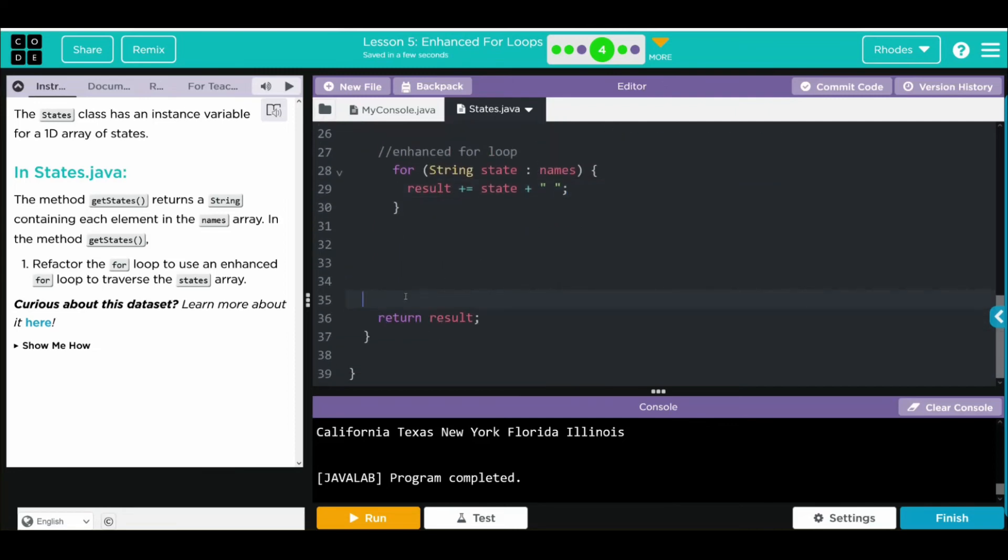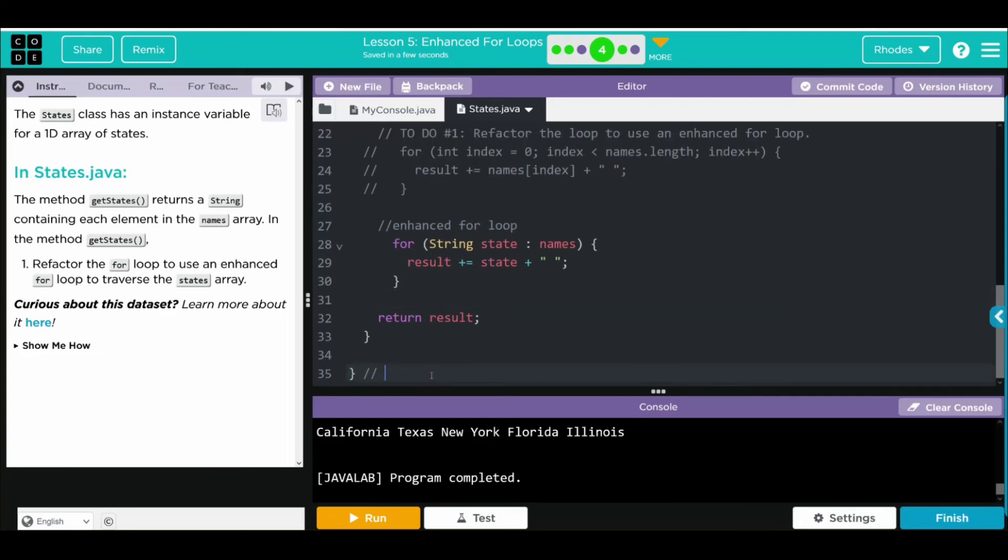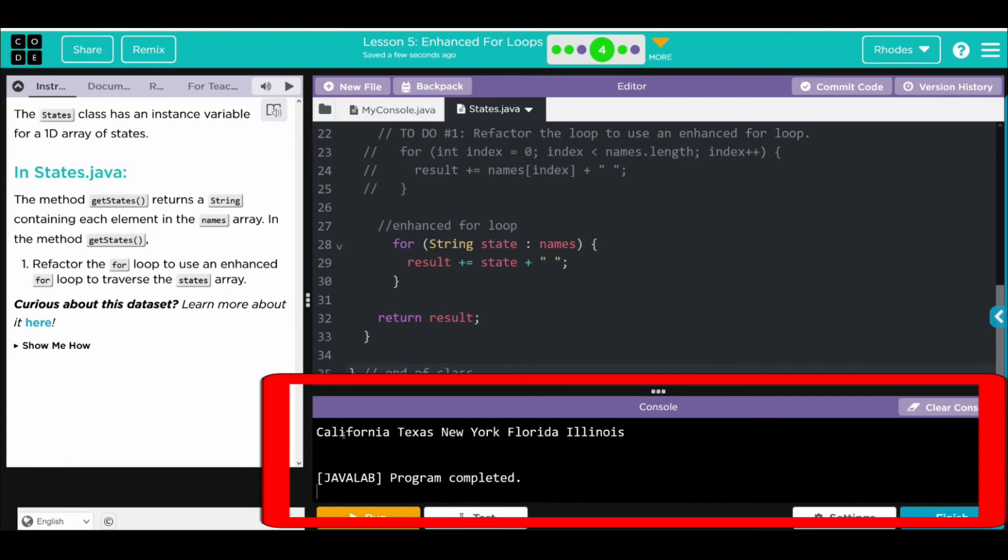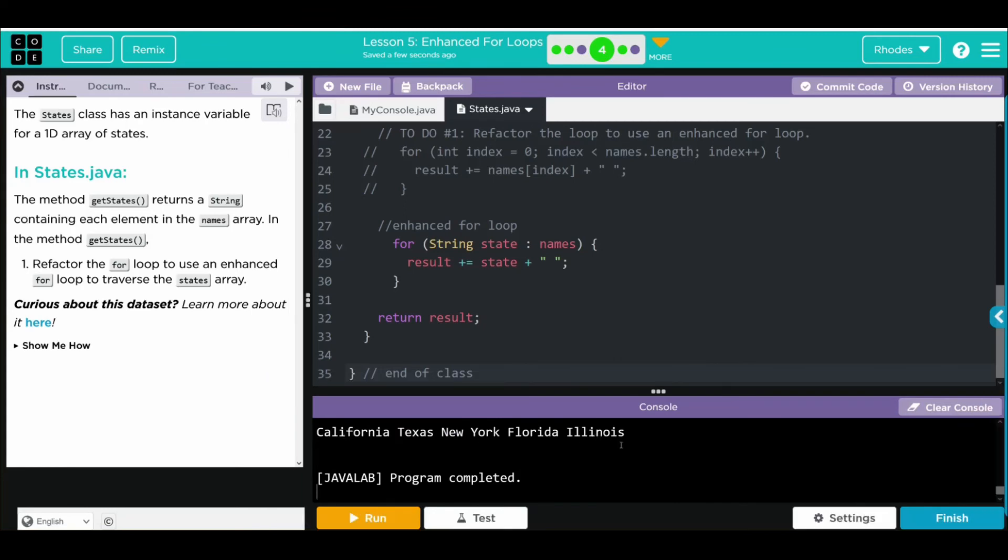Clean up our code a little. Go to our end of class. Code looks pretty good. When I hit run, I should get the same thing printed off. Let's hit run and see. And we got our five states to print off again. Looks like our enhanced for loop worked pretty well.